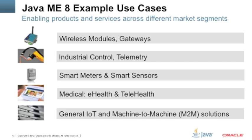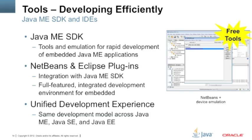Some examples of products where Java ME 8 could be used include wireless modules and gateways, industrial control and telemetry units, smart meters and smart sensors, e-health and telehealth medical equipment, and general Internet of Things and machine-to-machine solutions. A key benefit of the Java platform is the mature and efficient development model and tooling. Java ME 8 is supported by the Java ME SDK, or Software Developer Toolkit, which provides dedicated functionality for rapid development of embedded Java ME applications. The Java ME SDK also features plugins for popular IDEs such as NetBeans and Eclipse to provide a full-featured integrated development environment. As a result, Java offers a unified development experience across Java platforms, both in terms of code portability and tooling, enabling the entire ecosystem of 9 million Java developers and partners to develop Java embedded solutions.